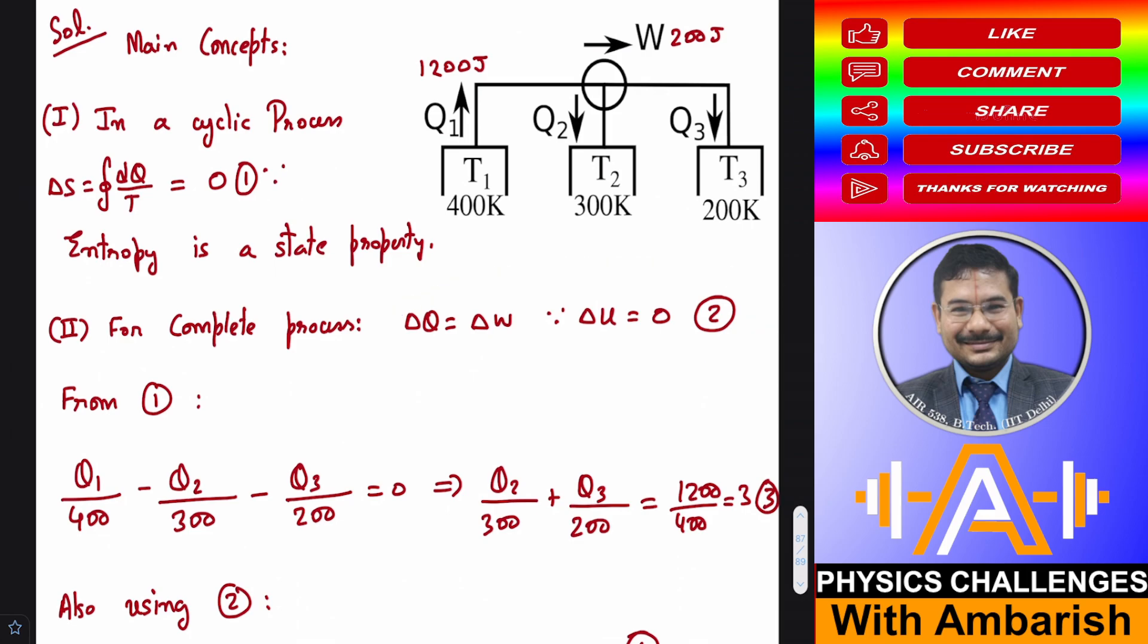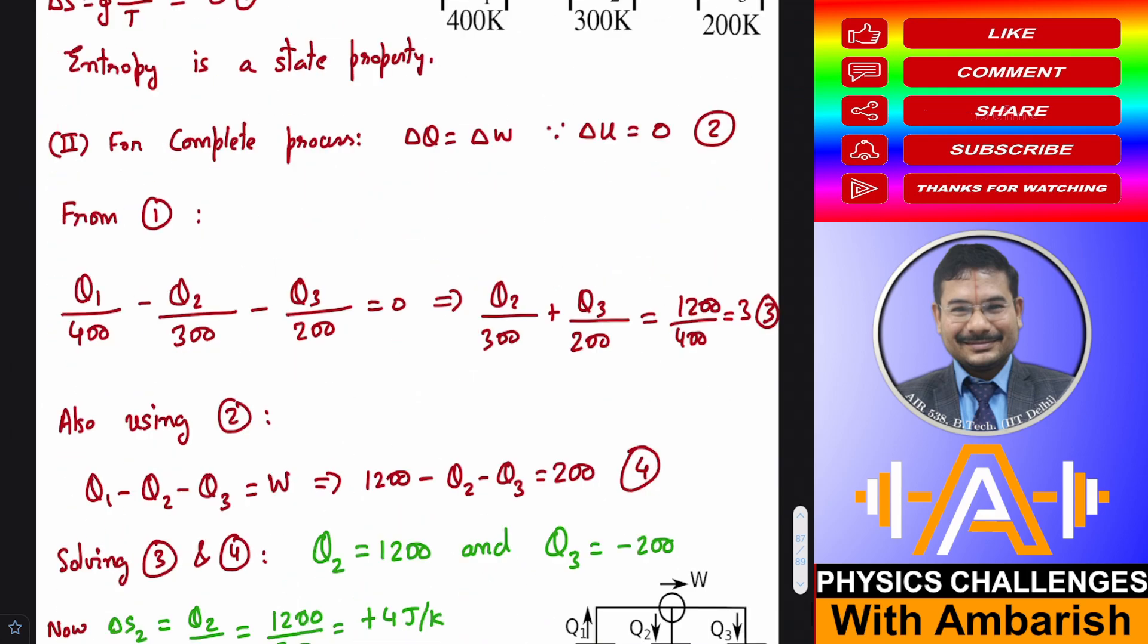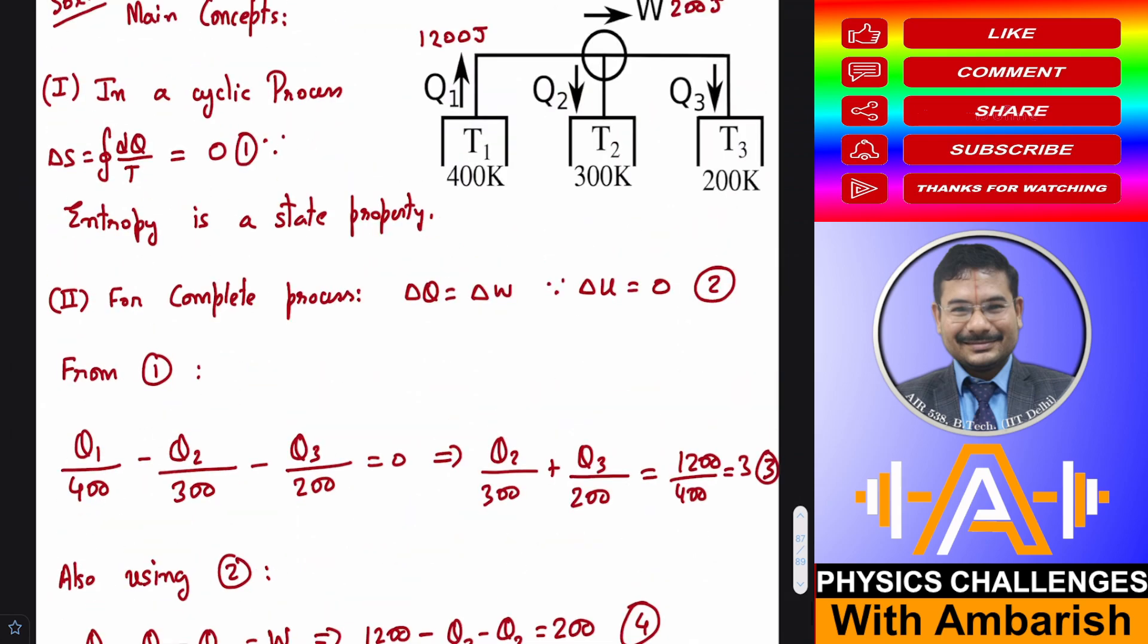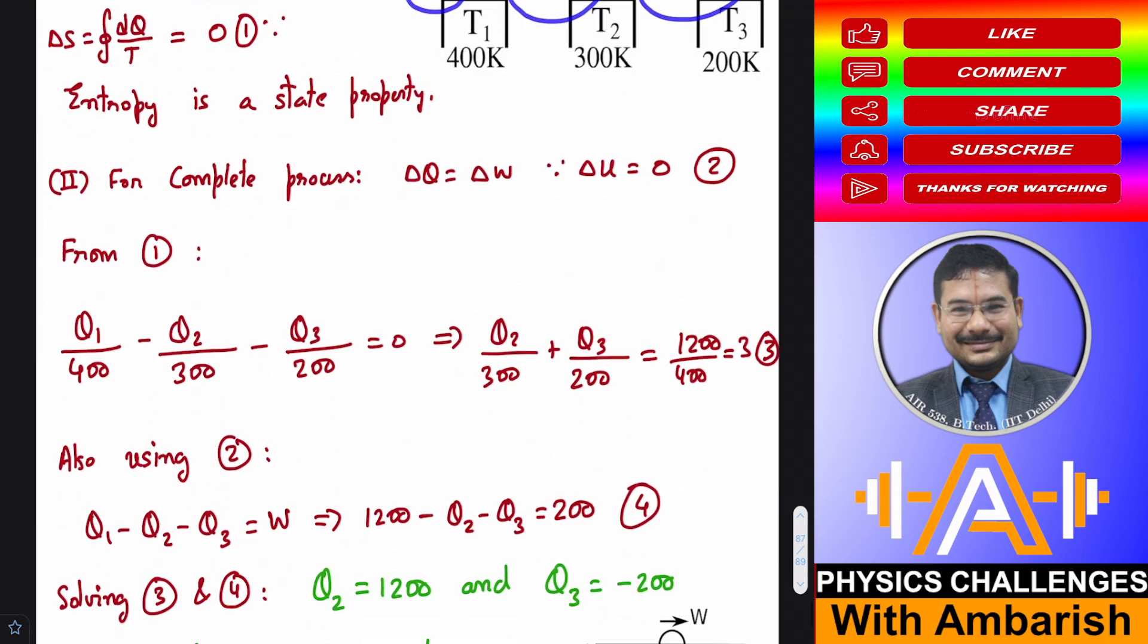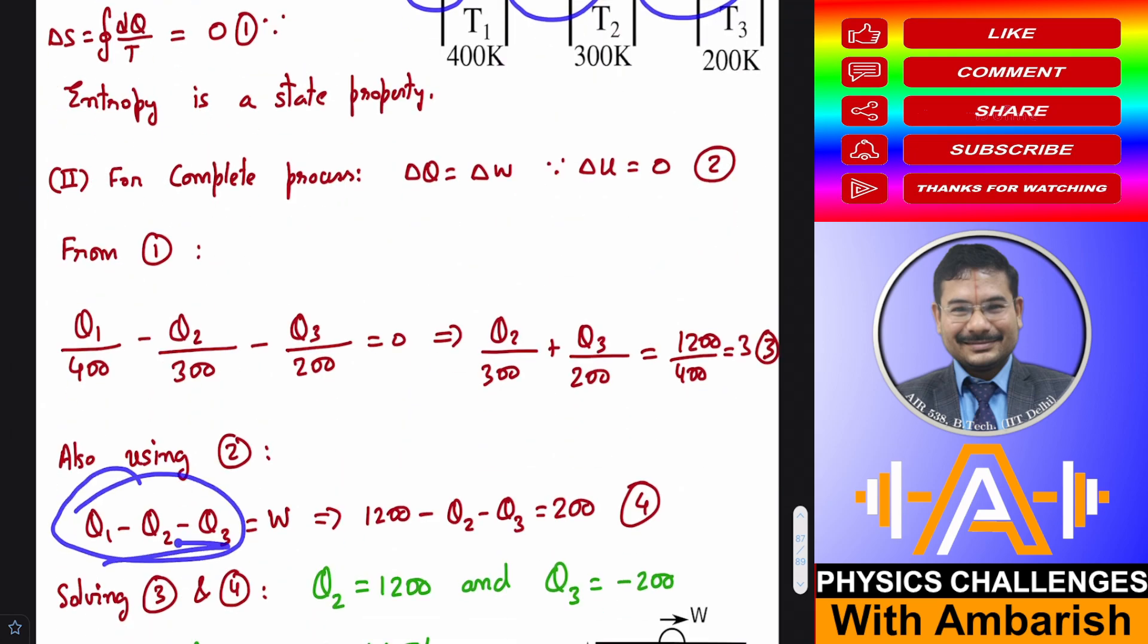So total heat absorbed should be equal to total work done in the entire cycle. So here the heat absorbed is Q1. Here heat rejected is Q2. Here heat rejected is Q3. So Q1 minus Q2 minus Q3 is equal to W. And Q1 is given as 1200. 1200 minus Q2 minus Q3 is 200.